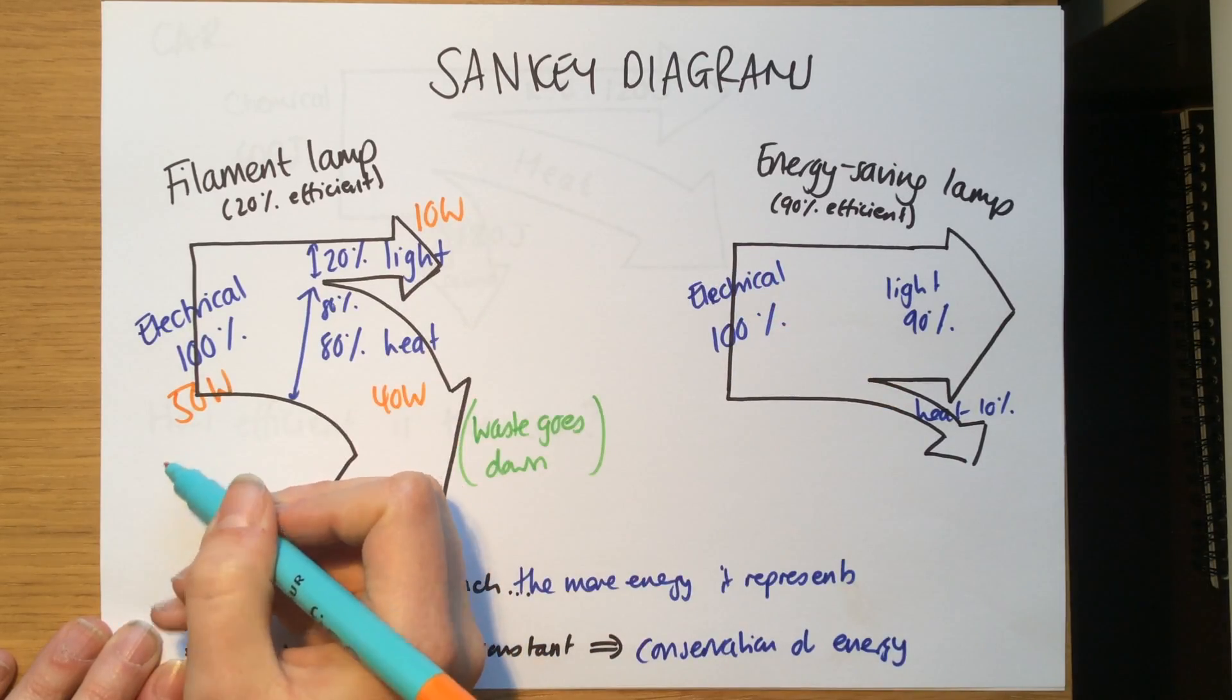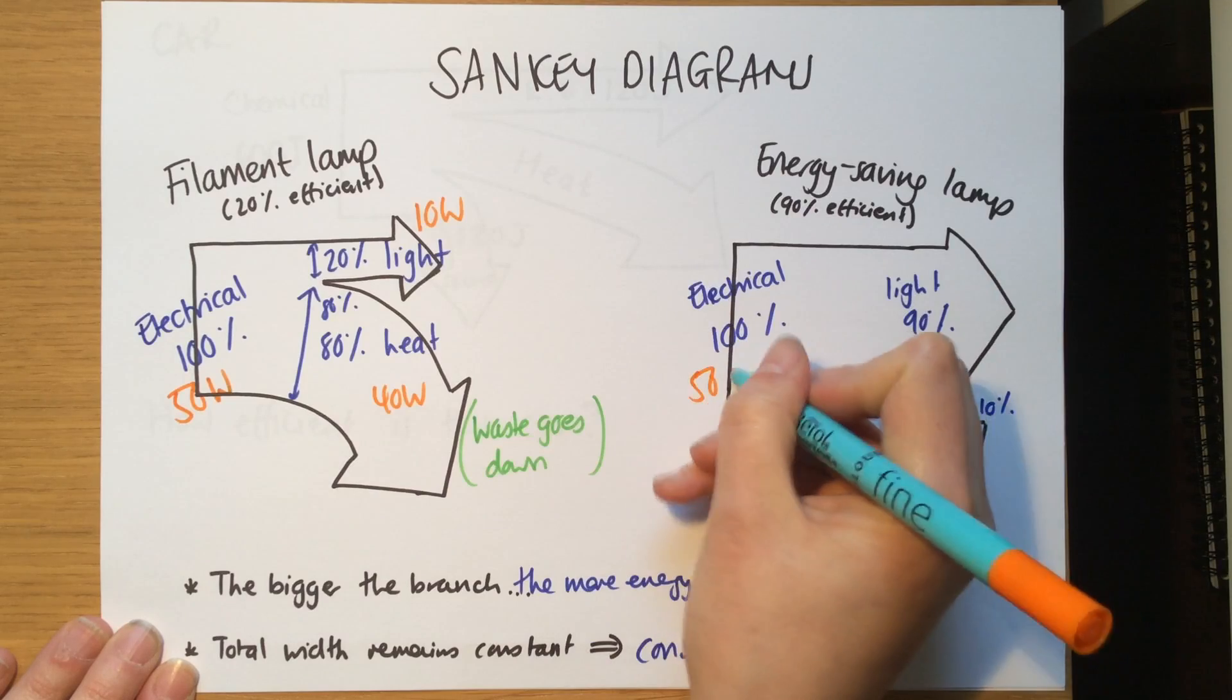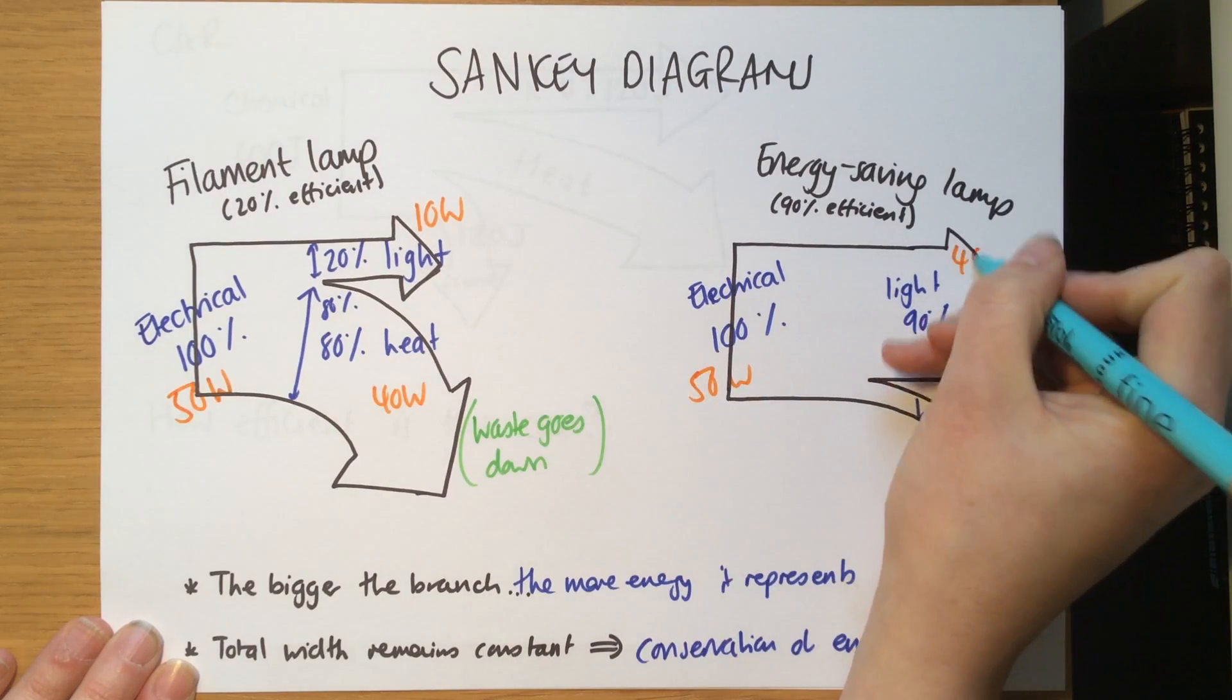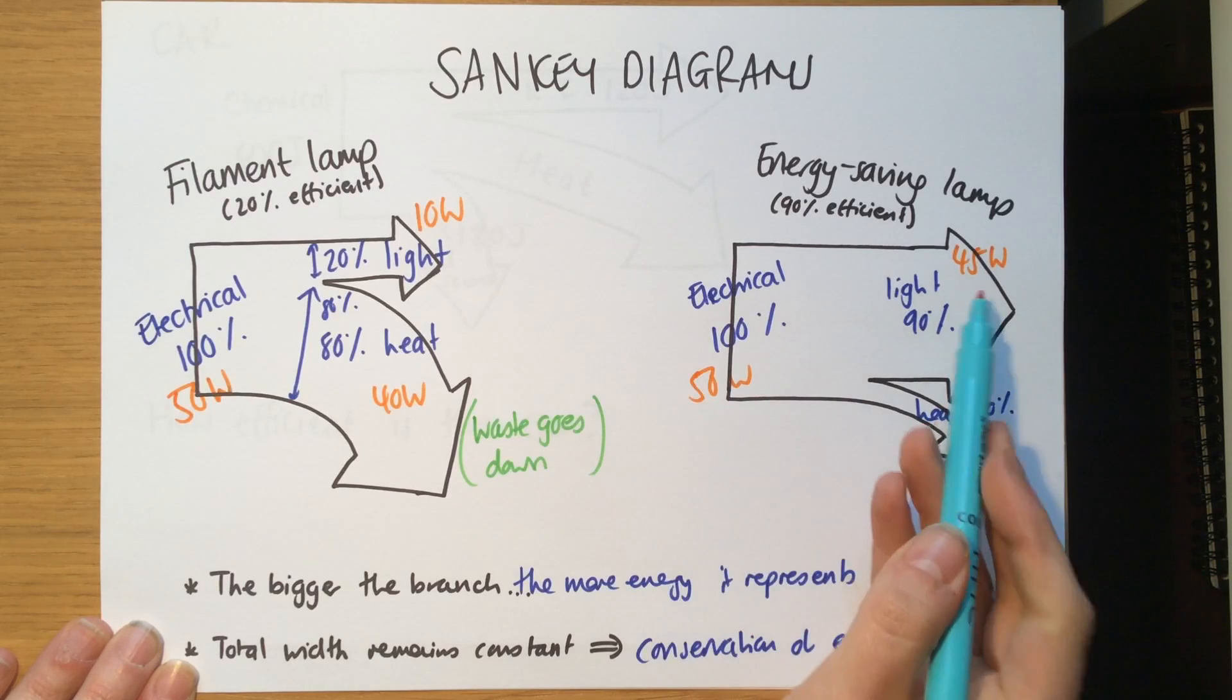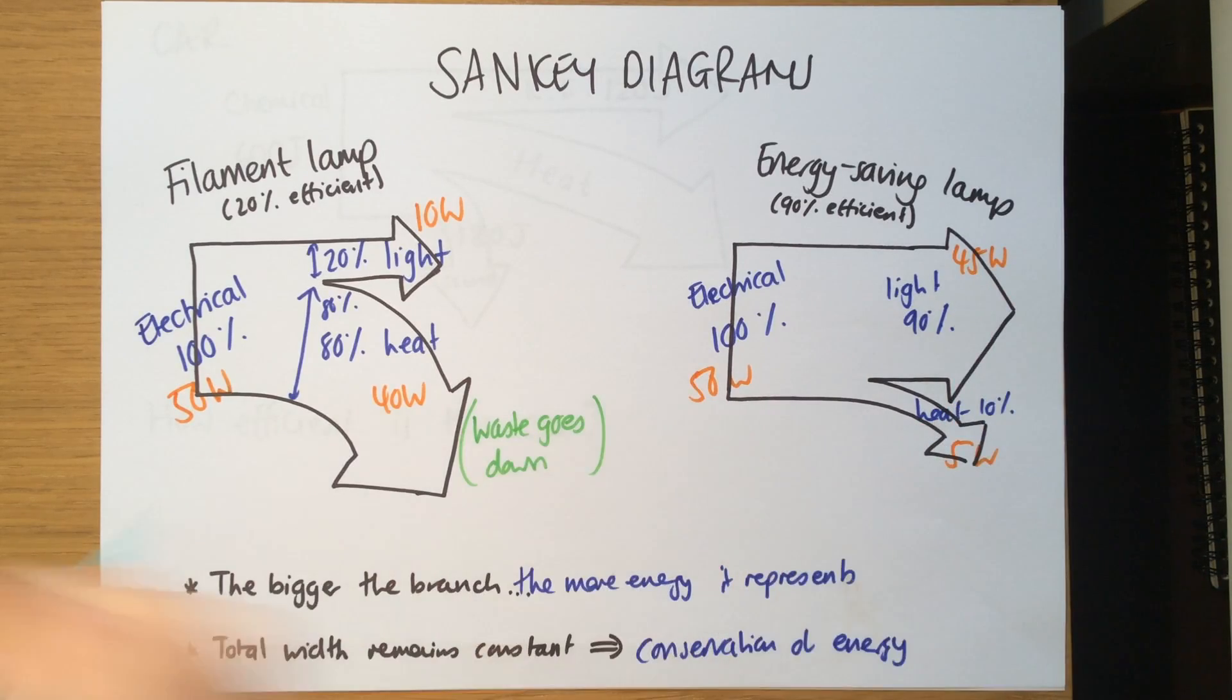If we have the same one here, 50 watts, this would mean that this was 45 and this was 5, because 10 percent is 5 and 90 is 45. Add them and it gets to 50.